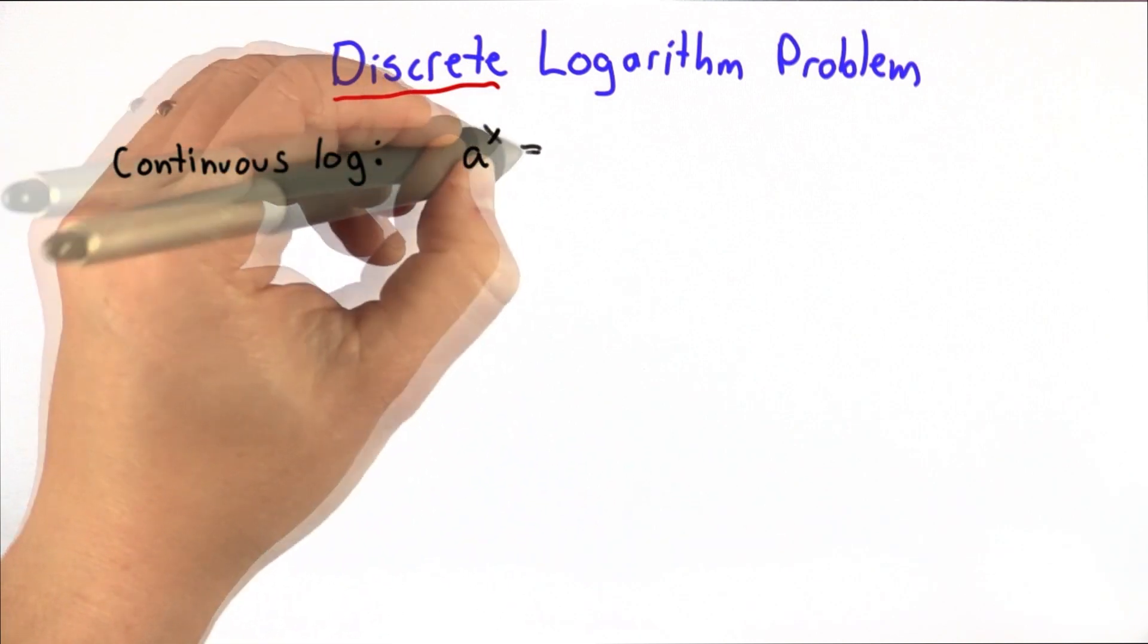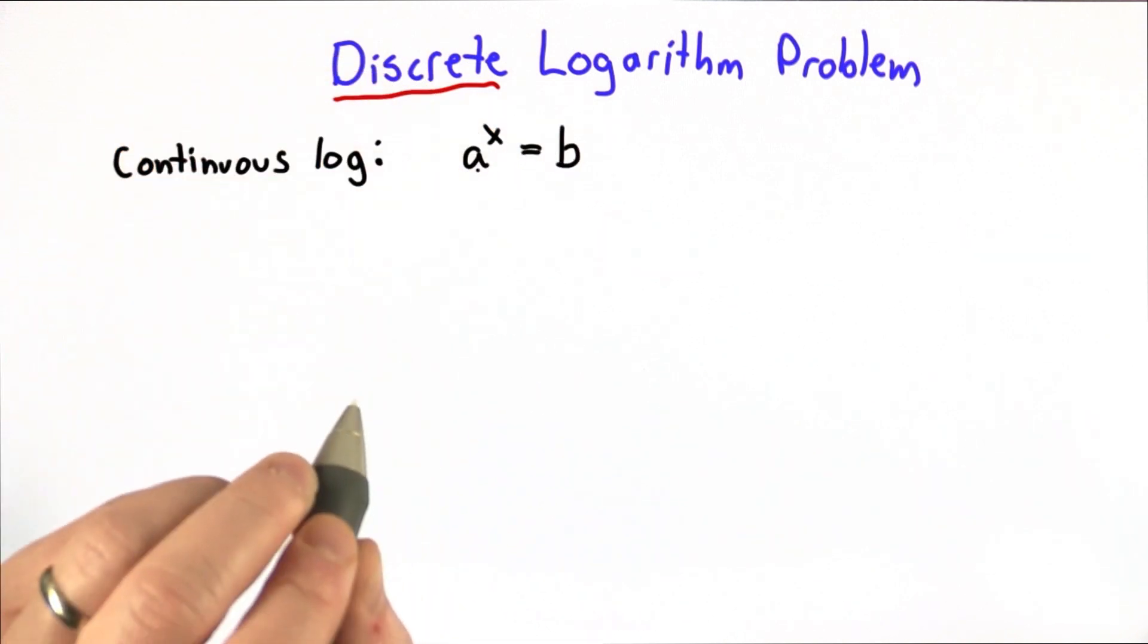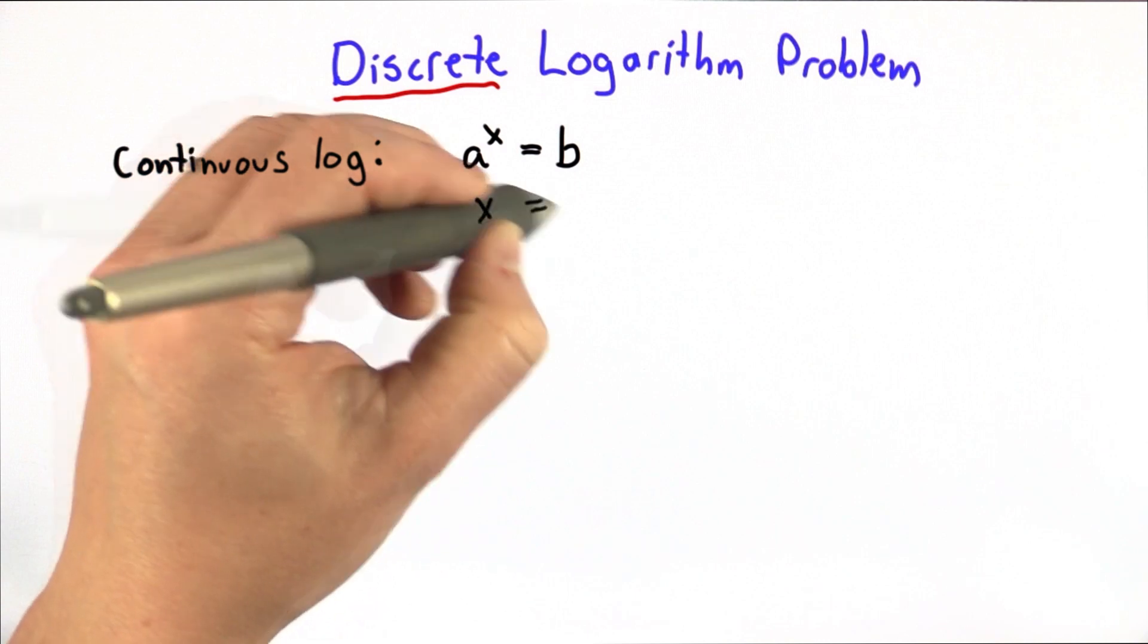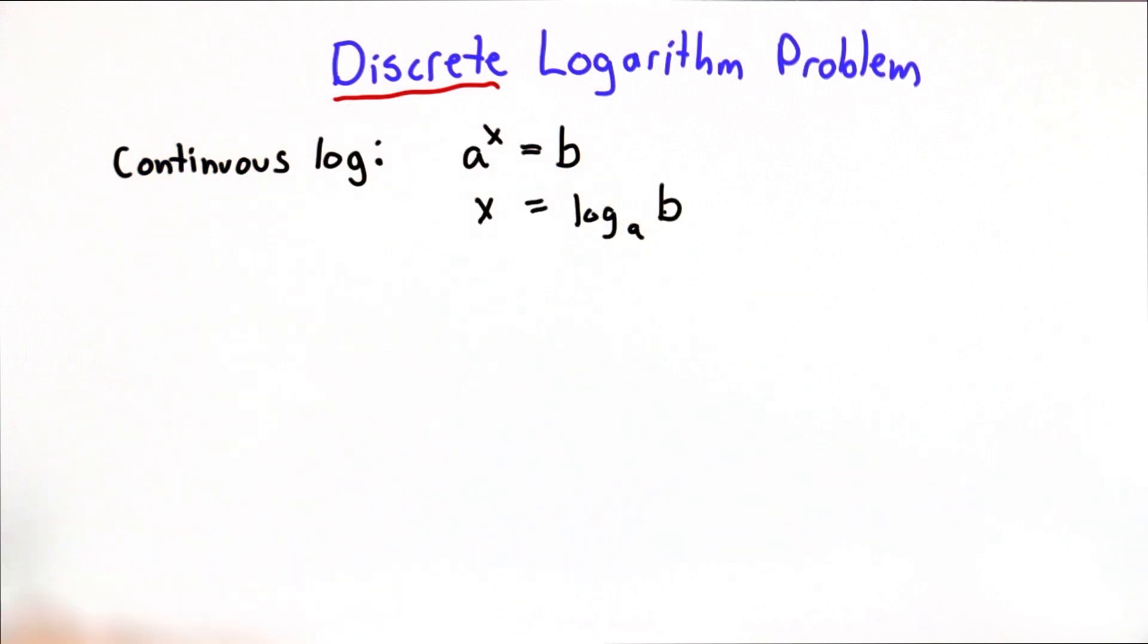So continuous log, if we have a to the x equals b, and we know a and b, we can solve for x. That's the log base a of b, and there are well-known, efficient ways to compute these logarithms.